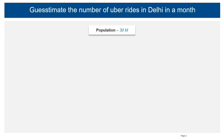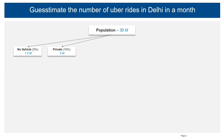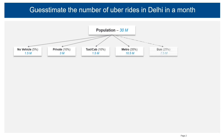The next filter I'm using is the type of vehicle used by people: no vehicle, private vehicle, taxi or cabs, metro, bus, and others. The split I've taken is 5% for no vehicle, 10% for private vehicle, 10% for taxi or cab service, 35% for metro, 25% for bus, and 15% for others.